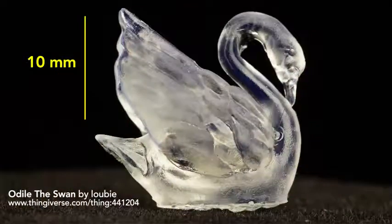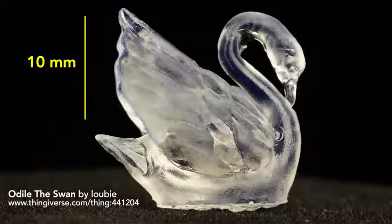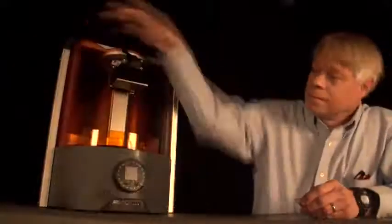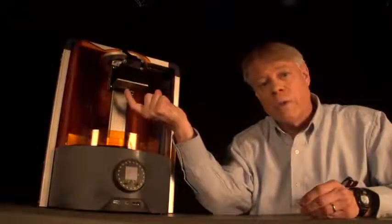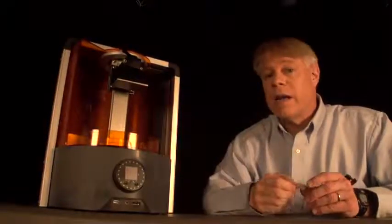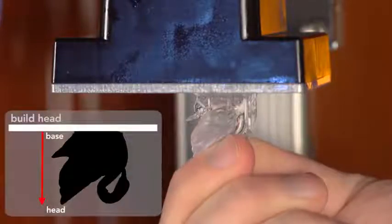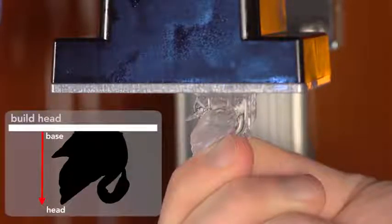Odile the Swan. It's one of several items used to test and benchmark 3D printers. On this printer, the swan is created here on the lower side of what is called the build head, or build platform. Odile will be printed upside down here, like this. The printer will first build the base, and then work its way to the swan's head.